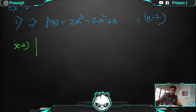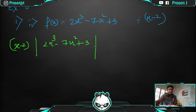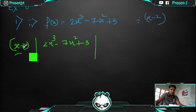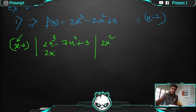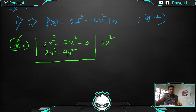Write it in classical format: x − 2 on the outside, and 2x³ − 7x² + 3 inside. My main intention is to bring 2x³. Multiply x − 2 by 2x²: that gives 2x³ from the first term. Multiplying −2 by 2x² gives −4x². After subtraction, 2x³ cancels and we get −7x² minus (−4x²) which is −3x². The constant 3 stays as is.